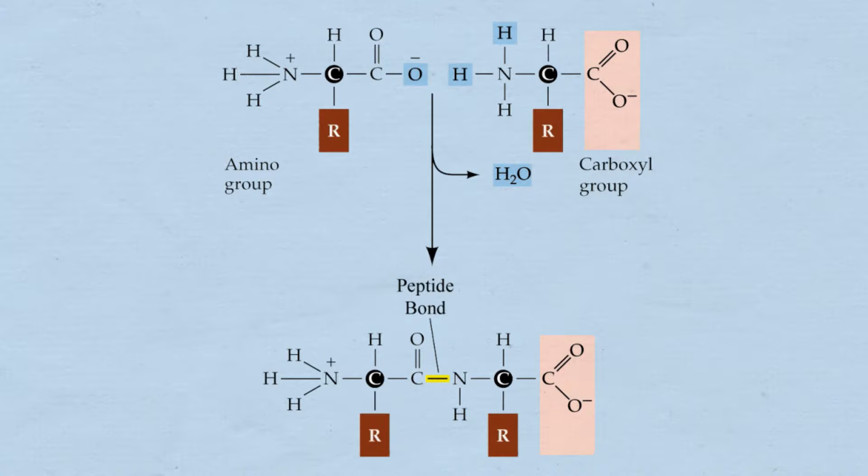So when the two amino acids bond together the bond is called a peptide bond and the two bonded amino acids are called a dipeptide. If more than two amino acids join together we call it a polypeptide.